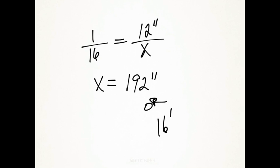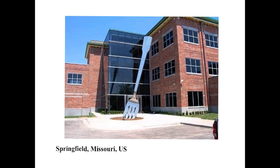Now scale drawings and scale models aren't only used to find out the distance across lakes and the heights of totem poles but they're also used in art. This is an example of a piece of art in Springfield, Missouri. Obviously it's a giant fork.